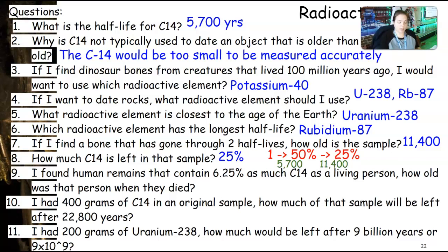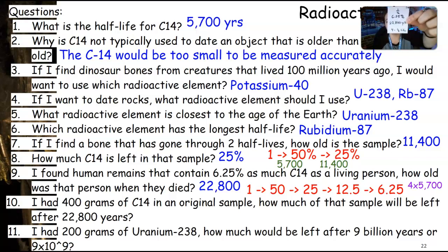If I found human remains that contain 6.25% as much carbon-14 as a living person, how old was that person when they died? Because you can't use these on the regions, I want to tell you how to calculate this. If I've got 6.25%, what I'm going to do is I'm going to start with that at this end and I'm going to work my way back to 100. So, I've got 6.25. I'm going to multiply that by two and I get 12.5. Multiply that by two, I get 25. Multiply that by two, I get 50. Multiply that, I get 100. I'm going to put arrows in between the numbers so that I can find out how many half-lives there are. One, two, three, four. There are four, so I'm going to have four times 5,700, 22,800 years. If you want to double check, right there, 6.25%, 22,800 years.